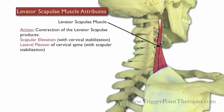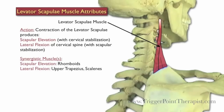Contraction of the levator scapula produces scapular elevation with the cervical spine stabilized, and lateral flexion of the cervical spine with the scapula stabilized. The rhomboids are synergistic during scapular elevation, whereas the upper trapezius and scalenes are synergistic during lateral flexion.